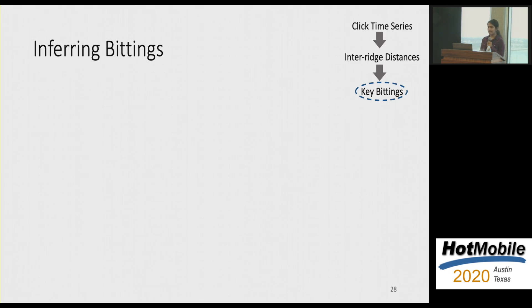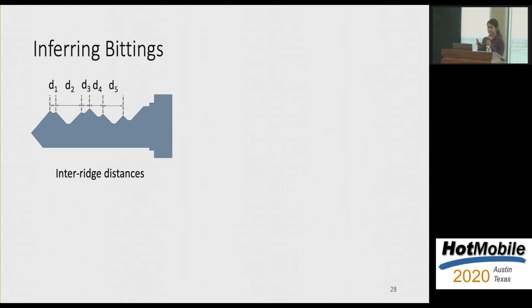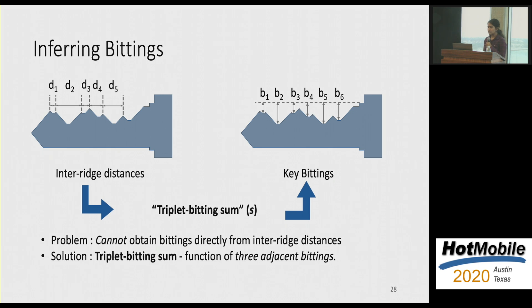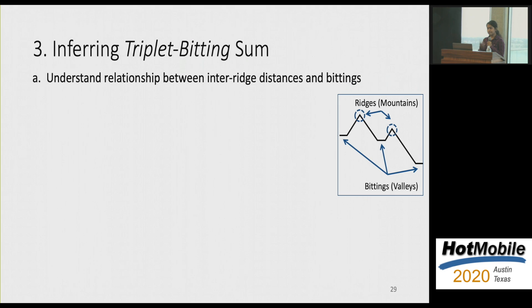So now that we have the inter-ridge distances, how do we infer the key bittings, which is actually the secret of the key? So to reiterate, what we have is the distance between edges and ridges in the key. And what we really desire is the depth of these different cuts, which is the bittings. Unfortunately, there's no direct mapping between inter-ridge distances and the key bittings itself. So what we kind of do is introduce an intermediate step, where we compute what we call as the triplet bitting sum. So this triplet bitting sum is essentially a function of three adjacent bitting positions. So instead of directly giving you information about the bitting value itself, what you get is a function of many bitting positions together.